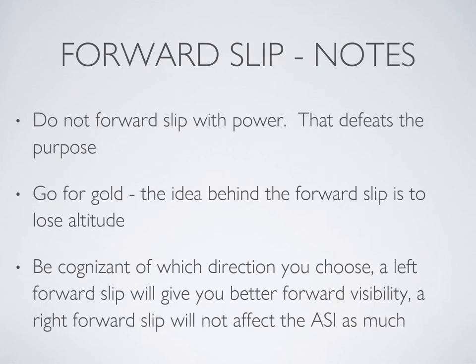A few very important notes about forward slips. The sole purpose of this maneuver is to lose energy by maximizing the amount of drag on the airplane. Because you are trying to shed energy, it makes no sense to carry additional energy into this maneuver, so before attempting a forward slip always remove power. To ensure maximum results, go for gold — give full rudder and sufficient aileron and forward pressure to maintain your forward flight path. It's going to feel weird, and that's a good thing. Also be cognizant of which direction you choose to slip: a left forward slip gives you better forward visibility, but a right forward slip will not affect the airspeed indicator as much.